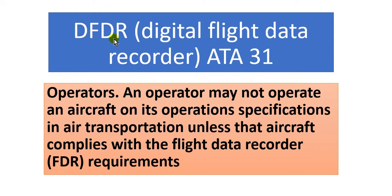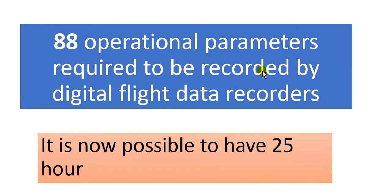This component is a no-go item. Operators may not operate an aircraft on its operations specifications and air transportation unless that aircraft complies with the flight data recorder requirement. So this is a no-go item. How many parameters are saved? 88 operational parameters are required to be recorded by digital flight recorders.